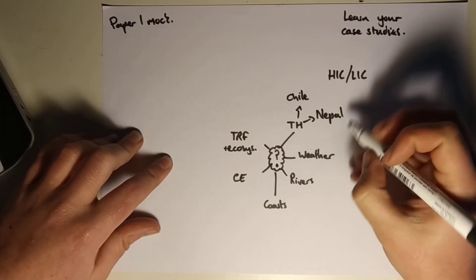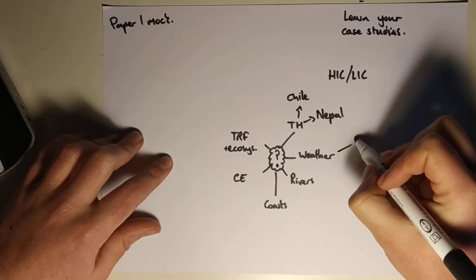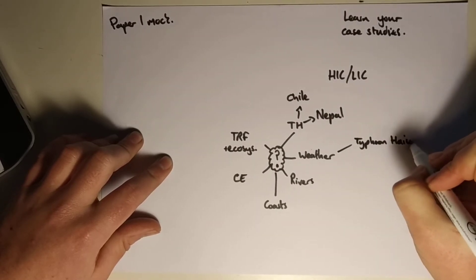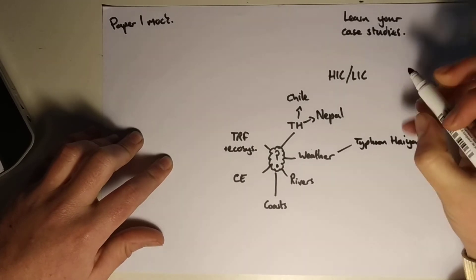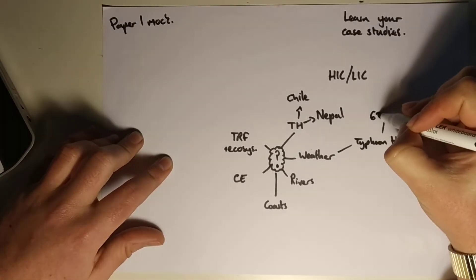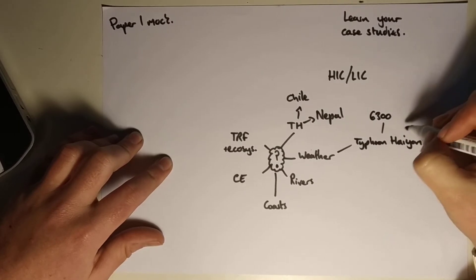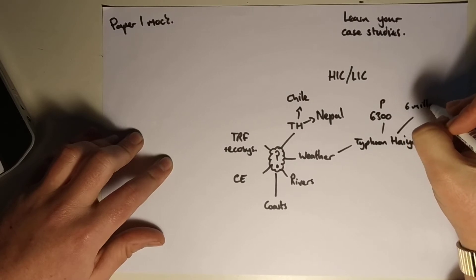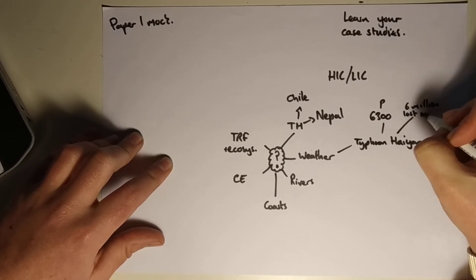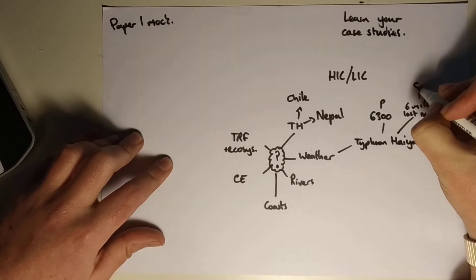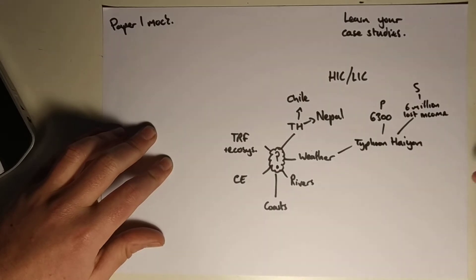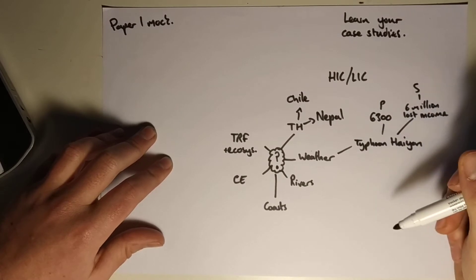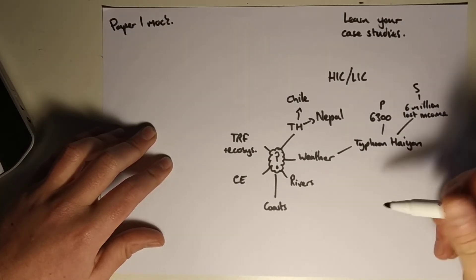For weather we've got a couple of mini case studies. We've got Typhoon Haiyan, which is in the Philippines. In primary effects killed about 6,300 people and six million is a secondary effect. I'll put PS and then six million lost their income. Okay and that is a secondary effect there. UK finally in terms of long term providing lots of financial aid to help impact. But again lots of information on your knowledge organiser to help boost you.